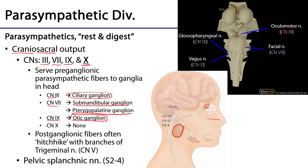Cranial nerve 10 leaves the head without supplying any parasympathetic ganglion. The vagus descends the neck in the carotid sheath, sending out branches to the pharynx, larynx, and various tissues of the neck. It also provides autonomic innervation to the cardiac plexus, the pulmonary plexuses, the esophageal plexus, and then descends into the abdominal pelvic cavity where it parasympathetically serves the foregut and midgut.